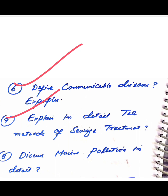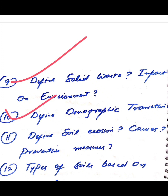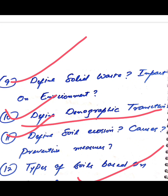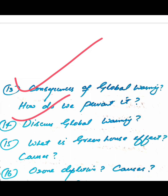Also important: explain in detail the methods of sewage treatment — this also appeared in the model paper. Discuss marine pollution — this also appeared there. Then ninth question: define solid waste and its impact on environment. Tenth question: define demographic transition — this is a very important question this year; it can appear in short form or long form.